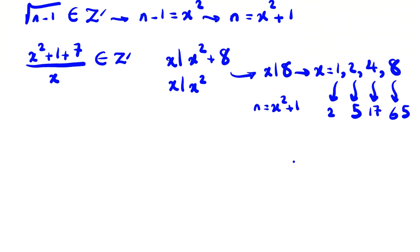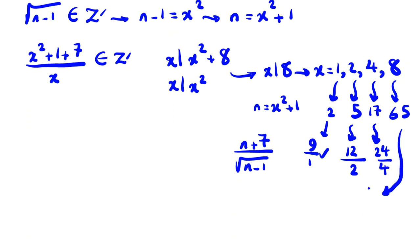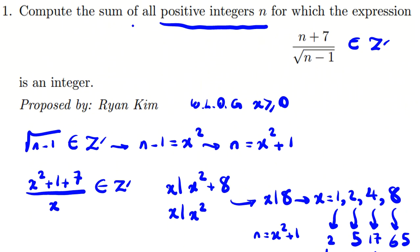And if we replace here (n + 7) over root (n - 1) we want to make sure, and for your solution it's good to check, do these numbers satisfy this? Is it integer? So 2 plus 7, 9, 9 over 1, it's okay. 5 plus 7, 12, over root of (5 minus 1) 4, root of that 2, it's okay. 17 plus 7, 24, over root of (17 minus 1) 16, root 16 will be 4, it's okay. 65 plus 7, 72, 65 minus 1, 64, root of that 8, it is 9. So all these numbers are okay.